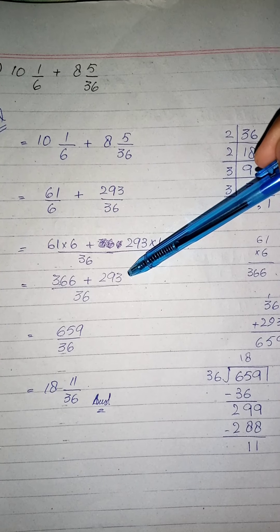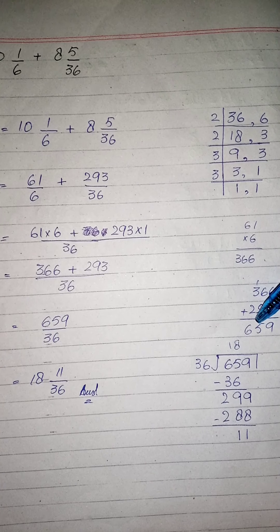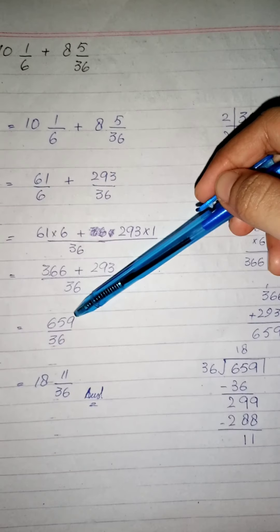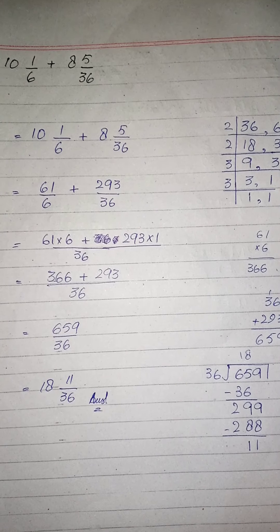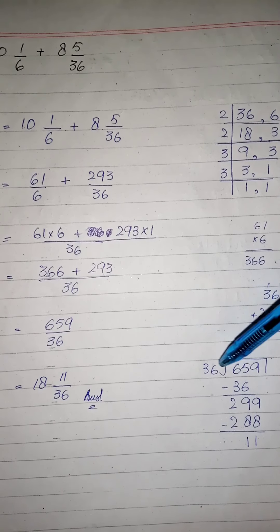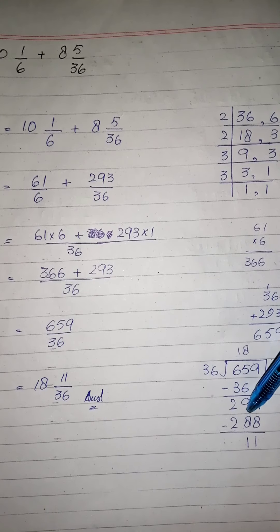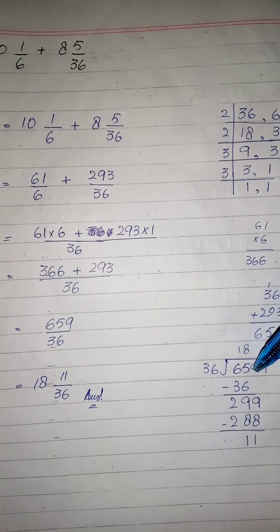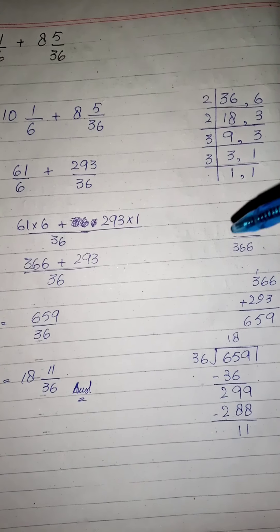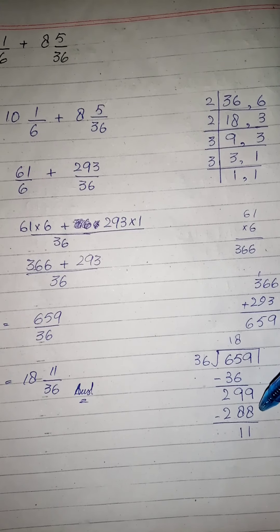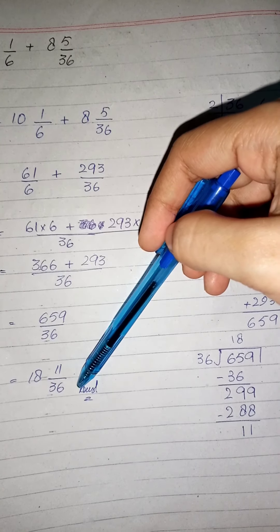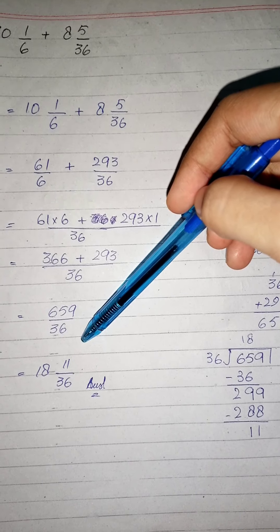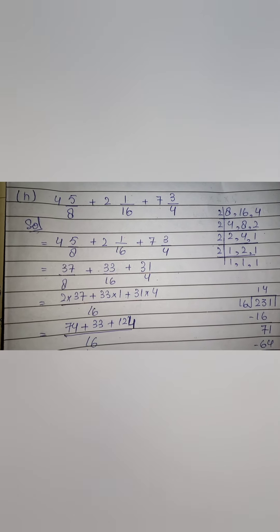Ab hum dekhenge ke hum ne six ko kitne times padha ke thirty-six aaya — six × 6 = 36, matlab six ko hum ne six times padha. To six ka jo numerator hai — sixty-one — us ko bhi hum multiply karwaenge six se. Phir beech mein plus aaya. Phir thirty-six ko hum ne one time padha, to thirty-six ka jo numerator hai — two ninety-three — us ko one se multiply karwaenge. Sixty-one × 6 = three sixty-six. Plus two ninety-three × 1 = two ninety-three. Three sixty-six plus two ninety-three = six fifty-nine. To six fifty-nine upon thirty-six hamare paas aa gaya.